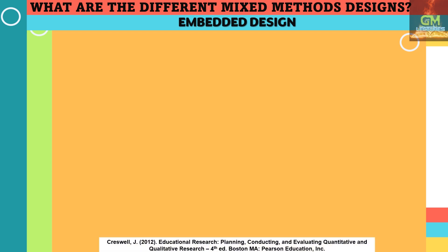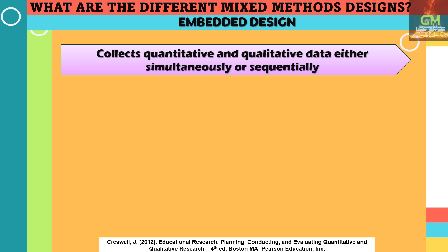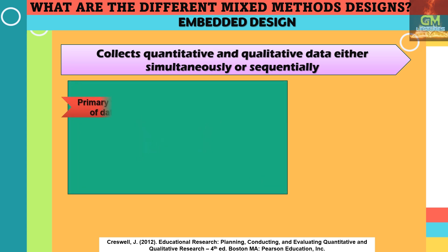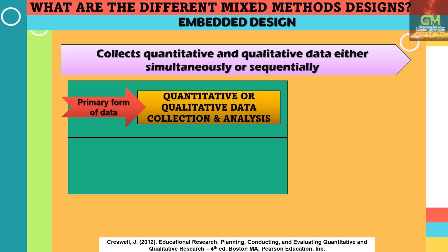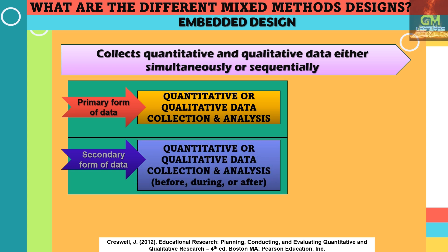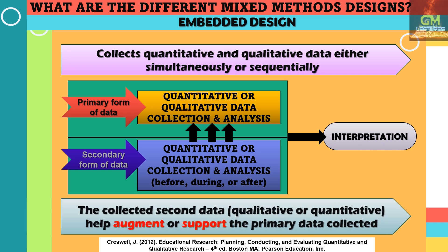First, we have the Embedded Design. In an Embedded Design, a researcher collects quantitative and qualitative data either simultaneously or sequentially. In an Embedded Design, we have a primary form of data, which is either quantitative or qualitative data, and a secondary form of data, which is also either quantitative or qualitative data. The collection of the secondary form of data may be done before, during, or after the collection of the primary form of data. The role of the secondary form of data is to help support or augment the primary form of data, afterwards leading to the interpretation.